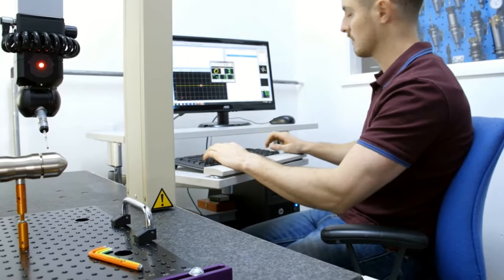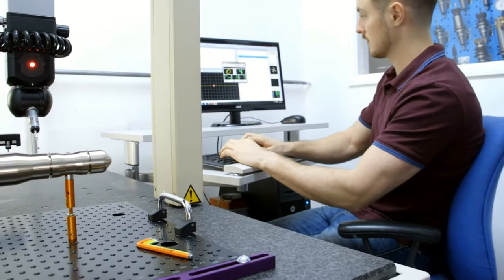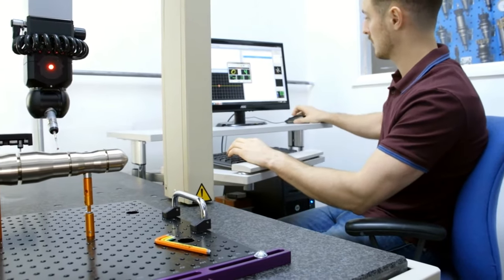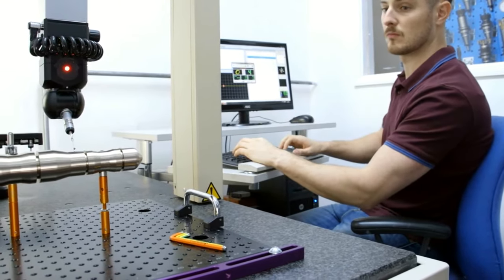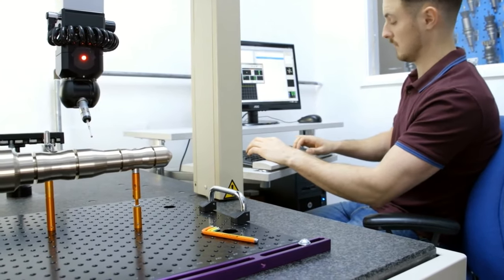In CMM inspection, objects can be inspected for quality. A coordinate measuring machine is used to measure the dimensions and characteristics of an object. It can measure a single point to the whole shape in 3D space.